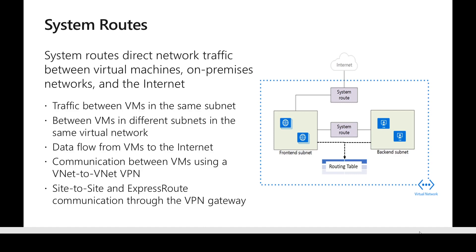The default behavior of system routes is: traffic between two VMs in the same subnet is allowed; traffic between VMs in the same virtual network across subnets is also allowed; outbound traffic from a virtual machine to the internet is allowed without any change; and connectivity like VNet-to-VNet VPN, site-to-site, or ExpressRoute is also allowed by default.